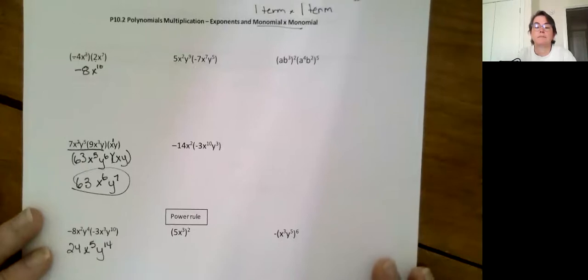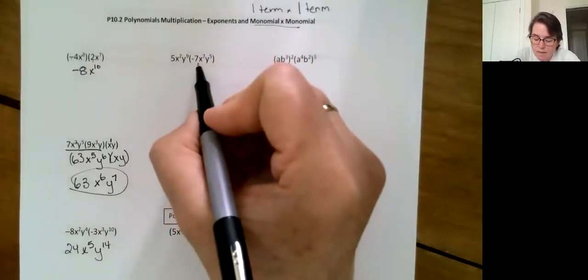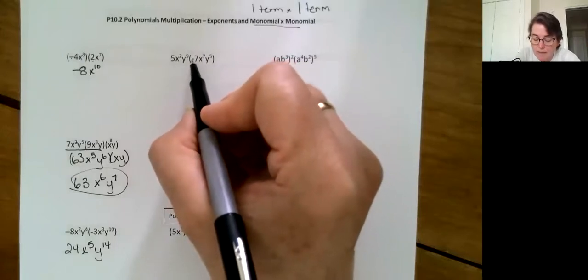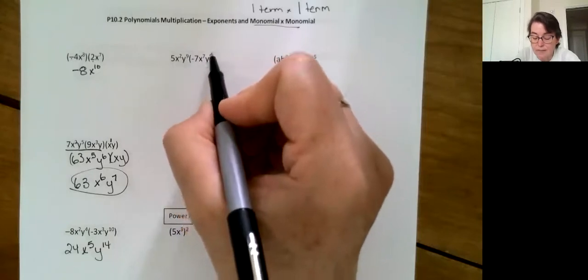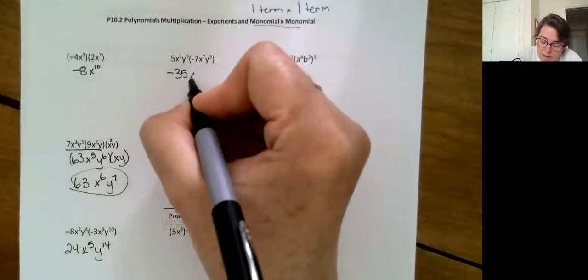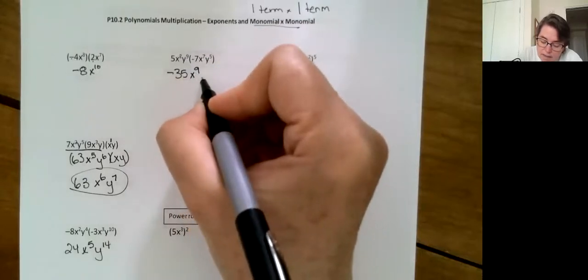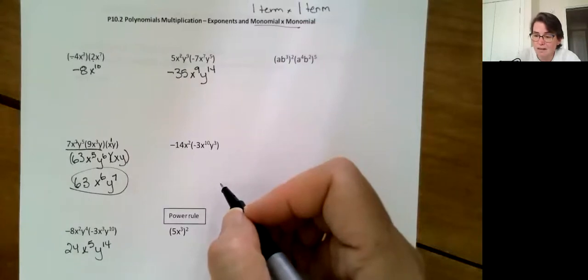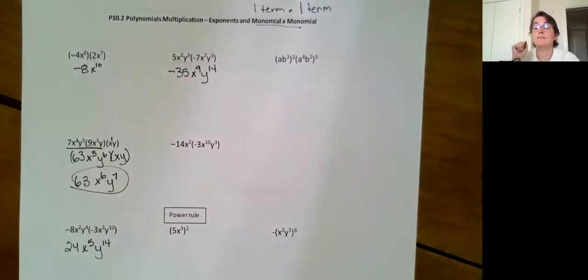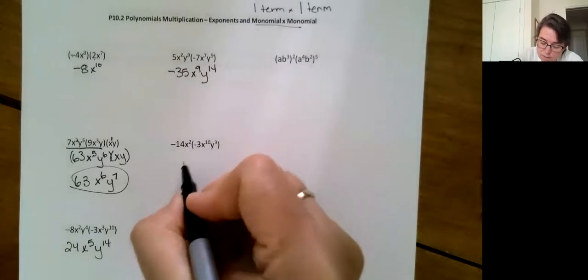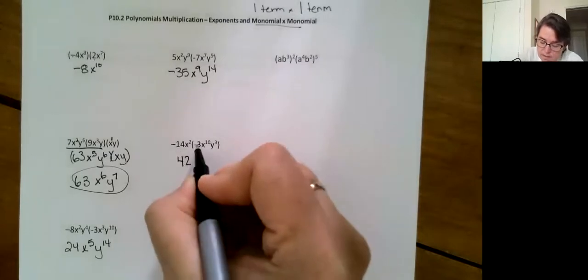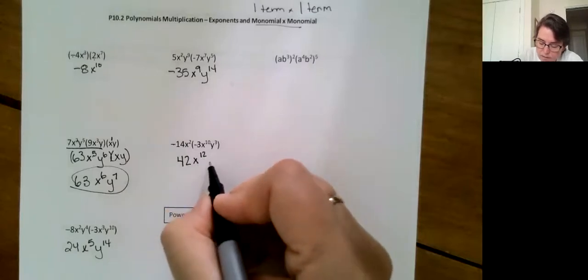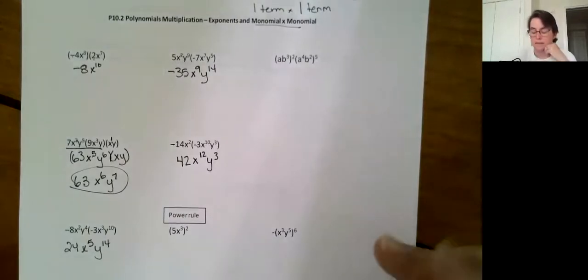Back up to the top here: 5x squared y9 times -7x to the seventh to the fifth. That gives us -35x to the 9th y to the 14th. This is not hard, it's just a matter of practice. Practice it this week and then next week review it so you don't forget the rules. You got to practice to make it permanent.